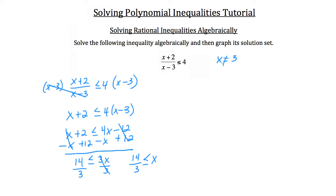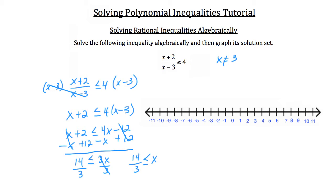We know that x cannot equal 3. So let's bring in our number line and mark the important values. We'll mark 3, and also 14 thirds, which is roughly 4.66 — about two thirds of the way between 4 and 5. We need to test the region to the left of 3, the region between 3 and 14 thirds, the value at 14 thirds itself, and everything to the right of 14 thirds.